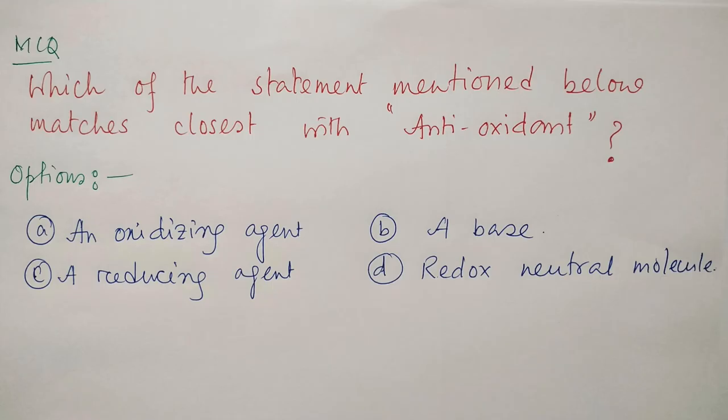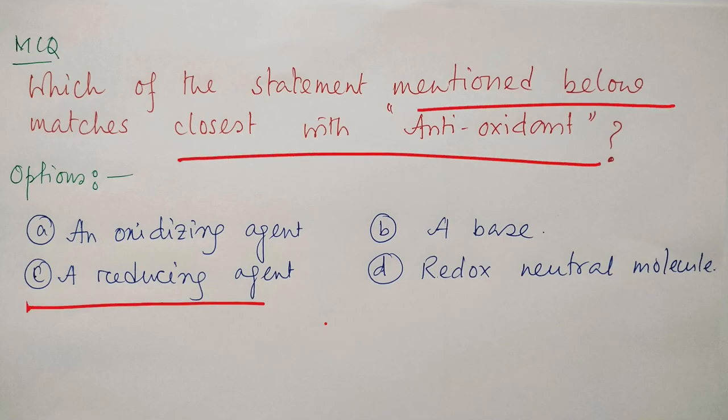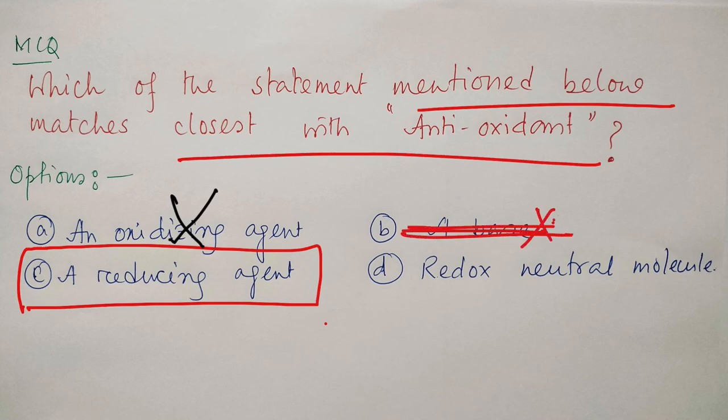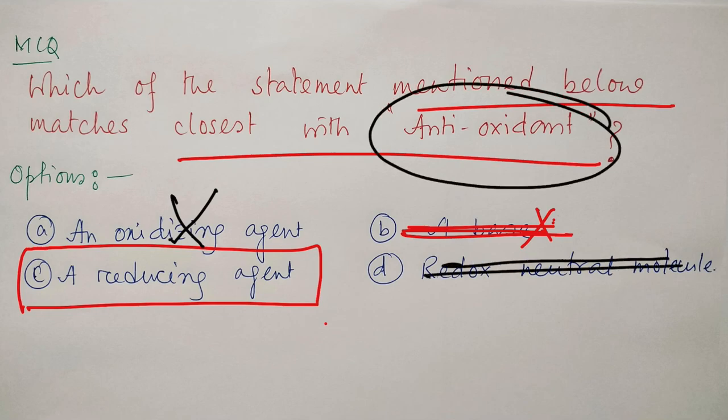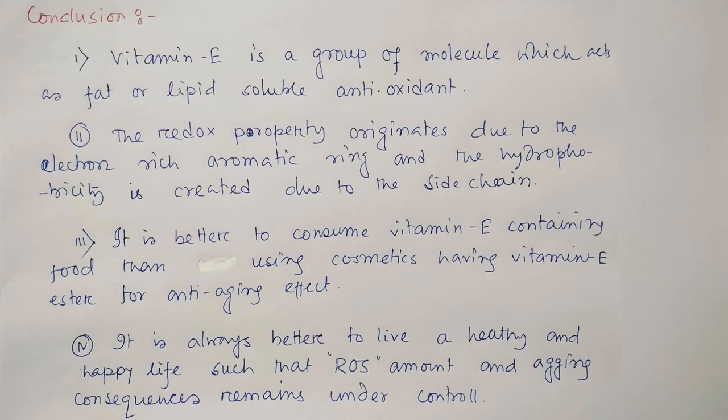Based on the MCQ, we can say which statement mentioned below matches closest to antioxidant: they are actually reducing agents. I guess you have done it already. Remember why not other options? They are oxidizing agent - not possible. Oxidizing agent means they will be reduced, means they will take electrons - not possible. They are electron-rich so they can't take electrons. They are acid - it's a redox phenomenon we are talking about, not acid or base. Redox neutral - actually we are talking about antioxidant redox phenomena, so how could they be redox neutral? This is also not possible.